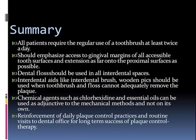The summary of plaque control: all patients require regular use of a toothbrush at least twice a day, with emphasis on access to the gingival margins of all accessible surfaces and extension as far onto the proximal surface as possible. Dental floss should be used in all interdental spaces. Interdental aids such as interdental brushes and wooden picks should be used when a toothbrush and floss cannot adequately remove plaque. Chemical plaque agents such as chlorhexidine and essential oils can be used as an adjunct to mechanical methods — not on their own.